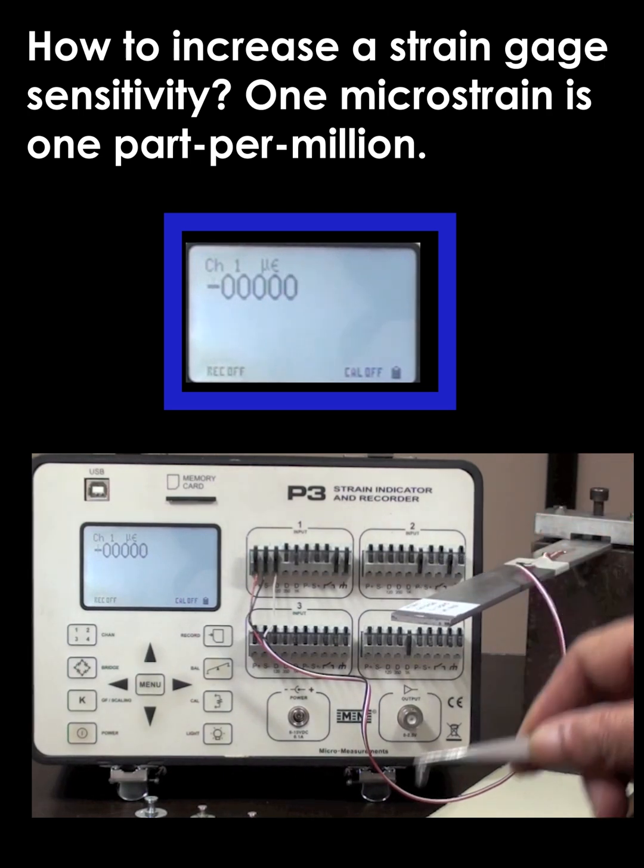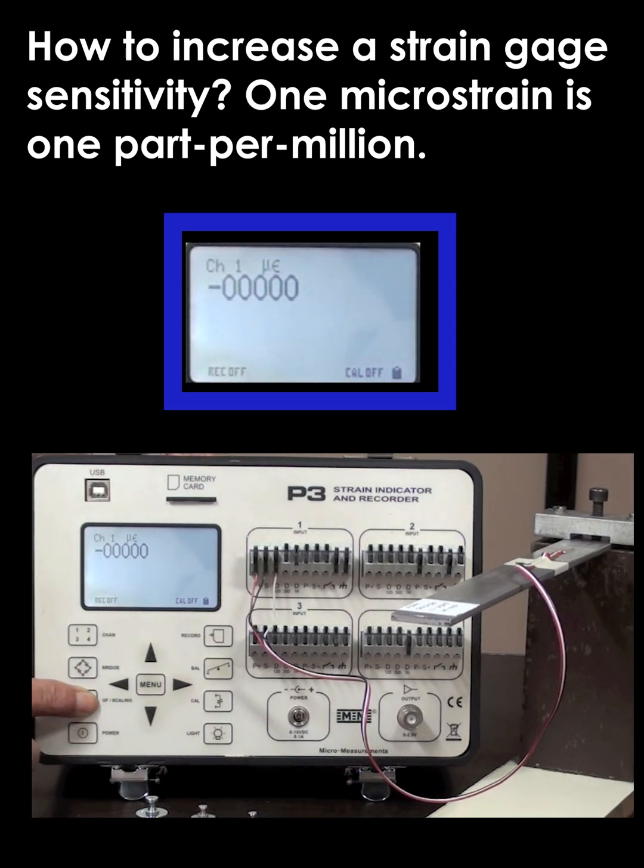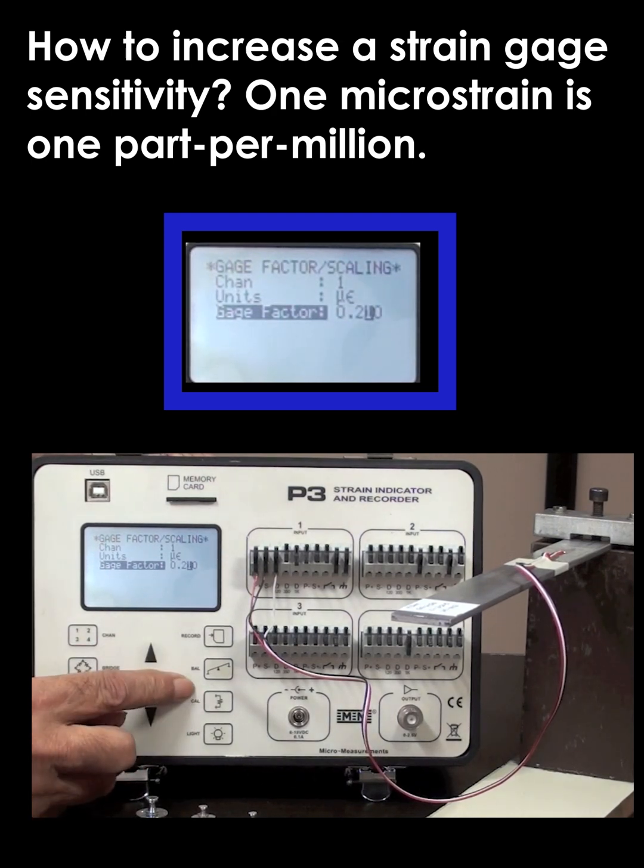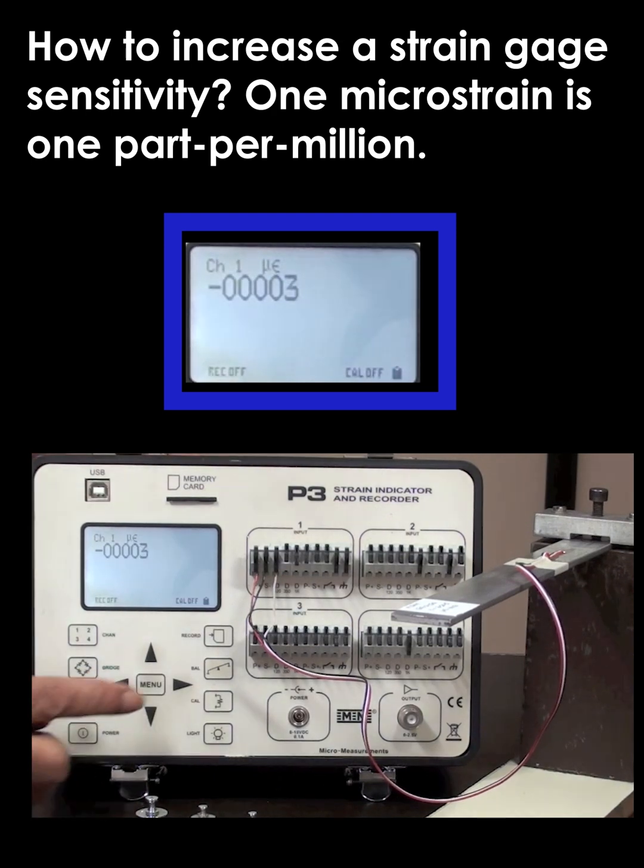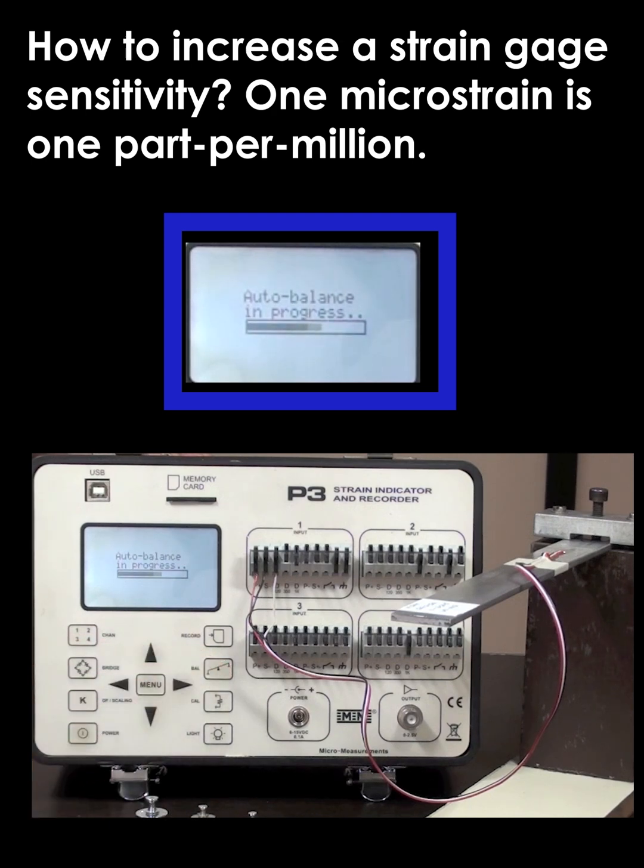Now one of the things you can do with a P3 is dial in the gauge factor. Remember we dialed it in to 2.120, but what we're going to do now is shift it by one digit—so instead of two point one two, it's going to be point two one two. Effectively, what that does is it gives us ten times the amount of resolution, so we'll balance it again to zero.